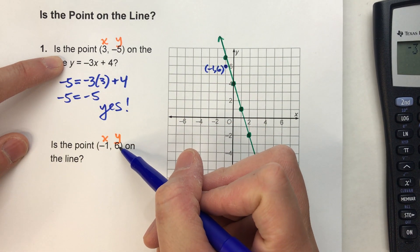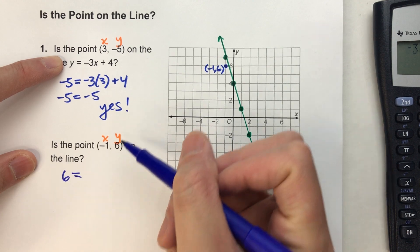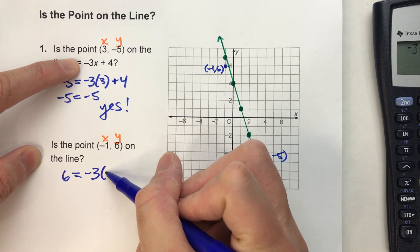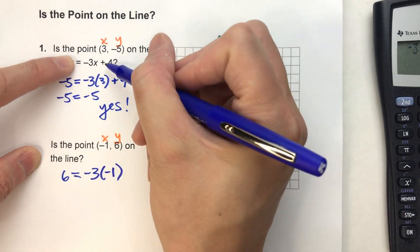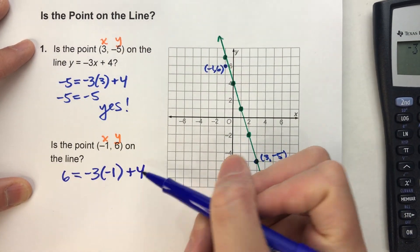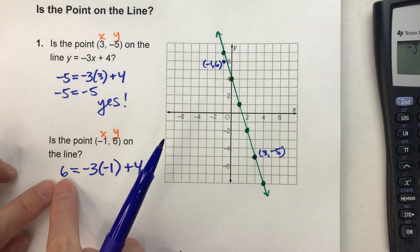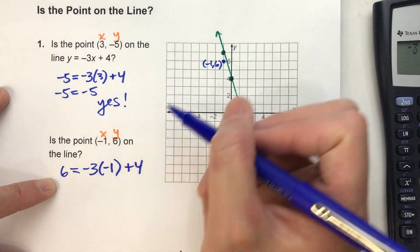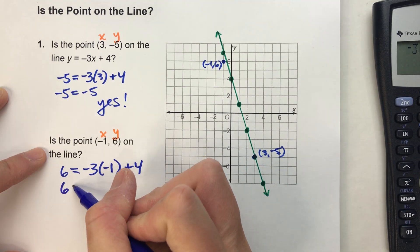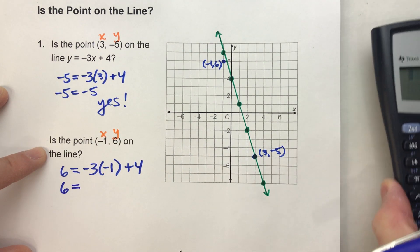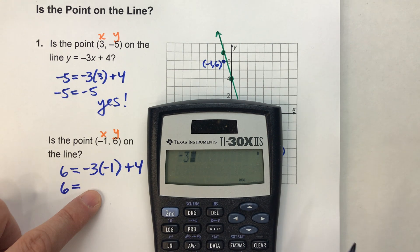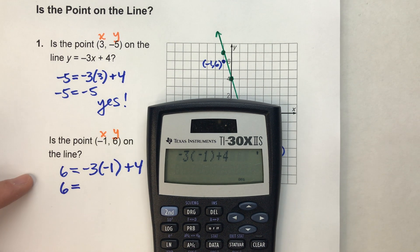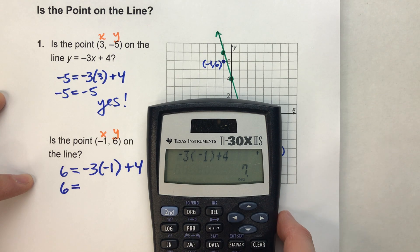y equals, so in this case, y is 6, 6 equals -3 times x, -3 times, in this case, -1, plus 4. So, if this side really does equal this side, then we know that coordinate is actually on the line. So, let's put it in our calculator and find out. We've got -3 times -1 plus 4. What do we get? 7.